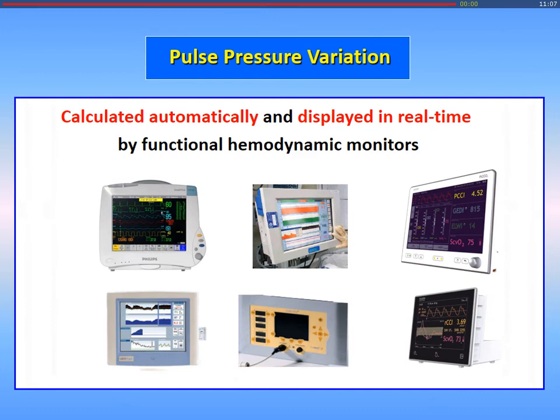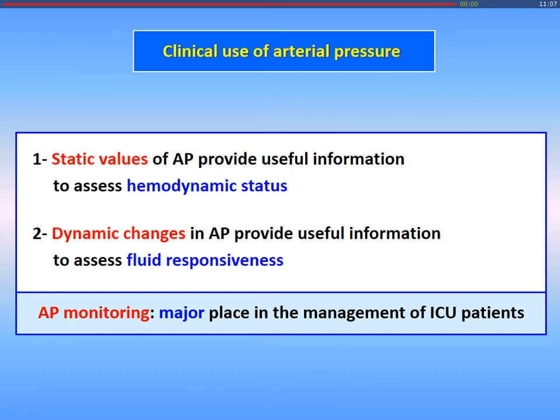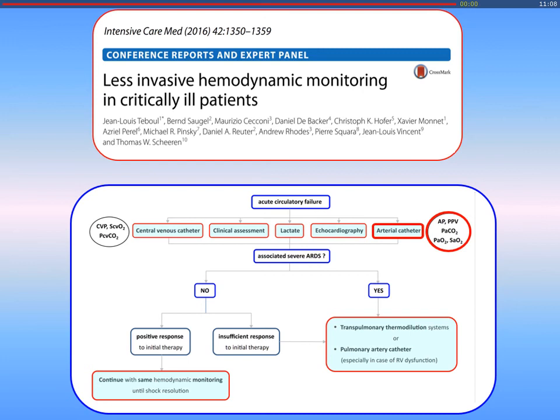We have many devices now able to look at PPV, and you know all the limitations. Just to finish, I emphasize the importance of arterial pressure monitoring at the bedside, essentially in shock patients. This expert panel paper — with Jean-Louis Vincent, Daniel De Backer, and others — proposes to insert an arterial catheter in every patient with shock. It is very useful to measure arterial pressure and all the values we discussed, but also PPV and to sample blood to measure PaCO2, PaO2, etc. Please use arterial pressure monitoring and use all the pieces of information you can obtain. Thank you very much.